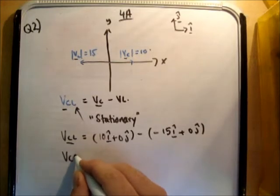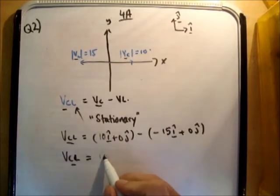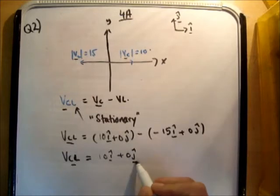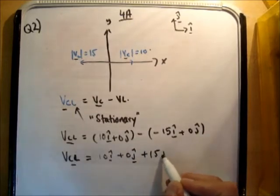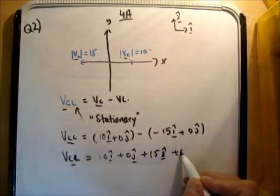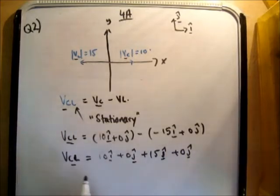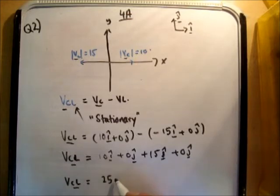So Vcl is equal to 10i hat plus 0j hat plus 15i hat plus 0j hat. And you can add of course anything that's in the same unit vector direction, so we're going to get 25i hat plus 0j hat.